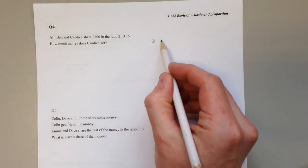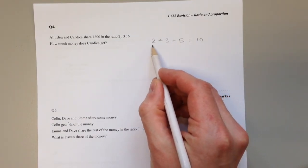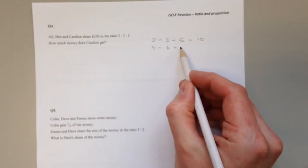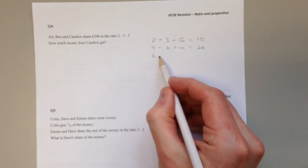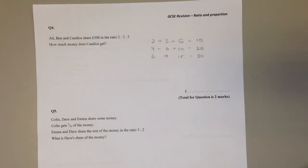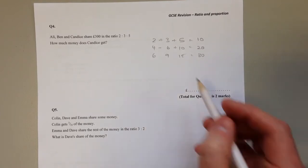Ali would get 2 pounds for every 3 pounds that Ben gets for every 5 pounds that Candice gets. You could share out 10 pounds in that way, and if they got twice as much, that's how you share out 20 pounds. Then 6, 9, and 15 would be how you share out 30 pounds. Obviously that's going to take a long time to get up to 300.